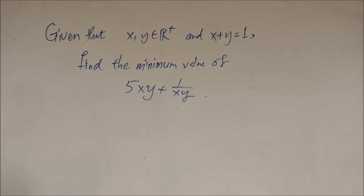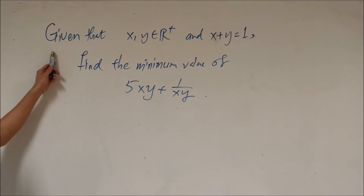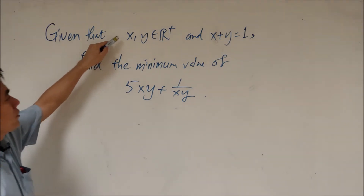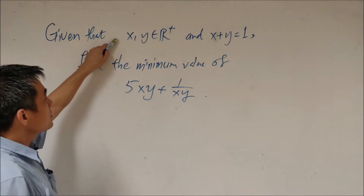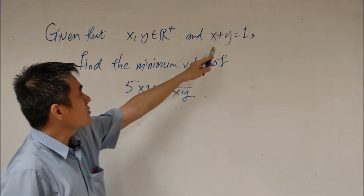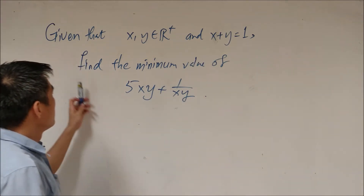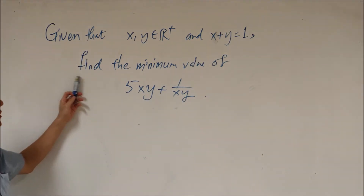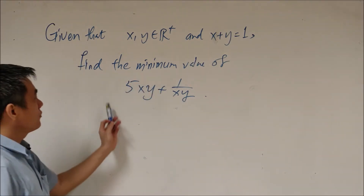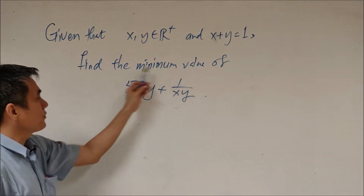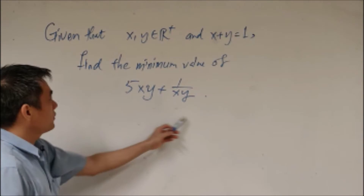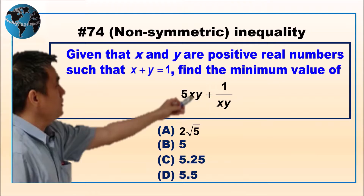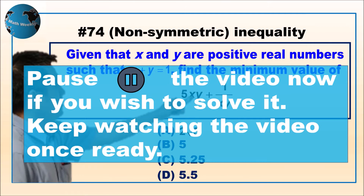This is a question. Given that x and y are positive real numbers and their sum is equal to 1, find the minimum value for this expression. Pause the video now if you wish to solve it, and keep watching once ready.